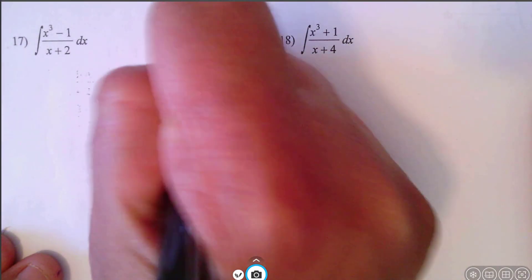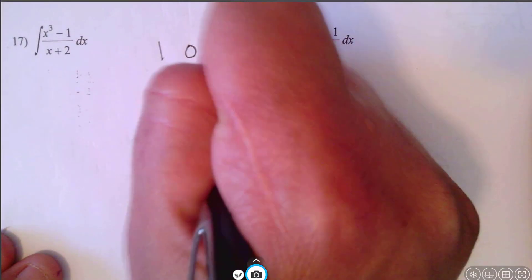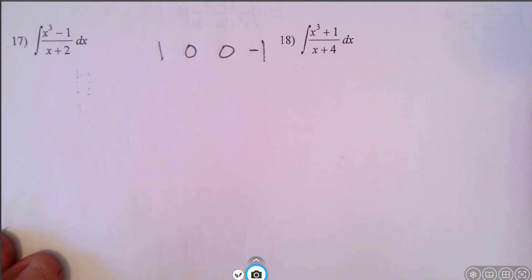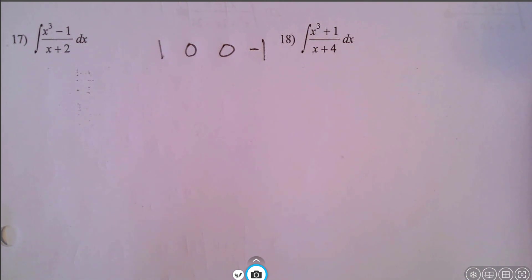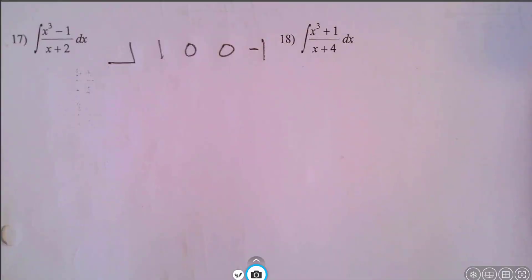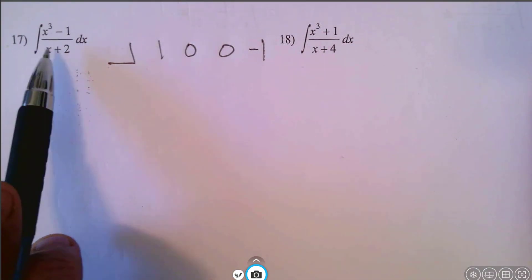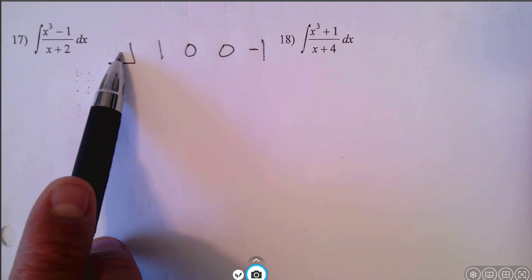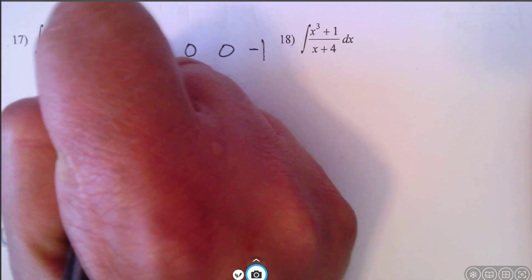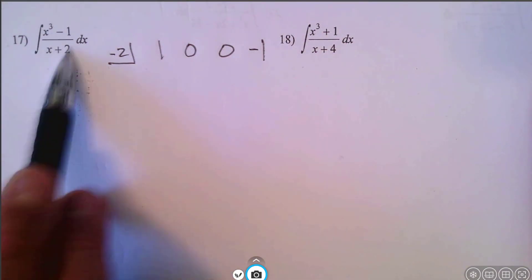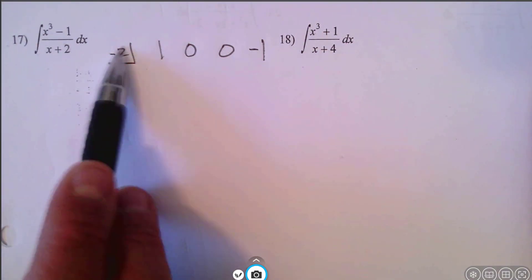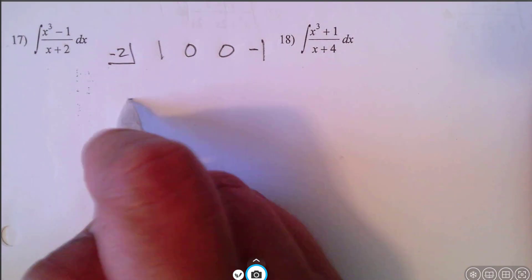We can write this as 1x cubed, there are 0x squareds, there are 0x's, and there's negative 1 for the constant. So when you're doing synthetic division, you need to keep track of all the terms, and if terms are missing, put 0s in those spots. Then we put a little box here — since we're dividing by x plus 2, the box is going to be negative 2. We can use synthetic division as long as we're dividing by a linear term; we just put in what the zero is and it will work out.